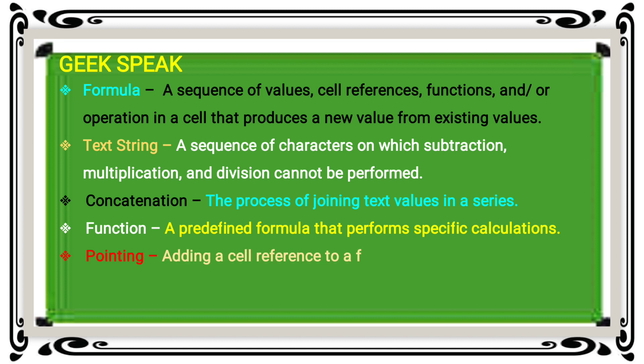Pointing: adding a cell reference to a formula by clicking a cell or range. You can select one or more cell ranges with two values to add to the formulas. You can select the cells and combine the formulas to reference cells. This reference cell process is called pointing.